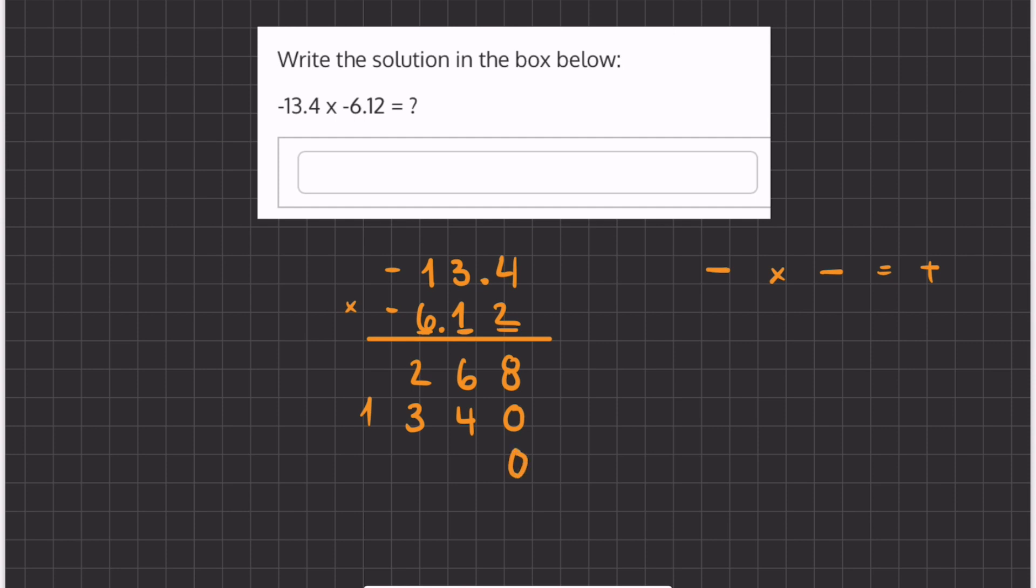Now we're going to move on to our next column, our final one. We're going to place two placeholders before we start multiplying. So now we have 6 times 4, which is 24. We're going to carry over the 2 and write down the 4. Now we have 6 times 3, which is 18, plus 2, which gives us 20. And now we have 6 times 1, which is 6, plus 2, which gives us 8.